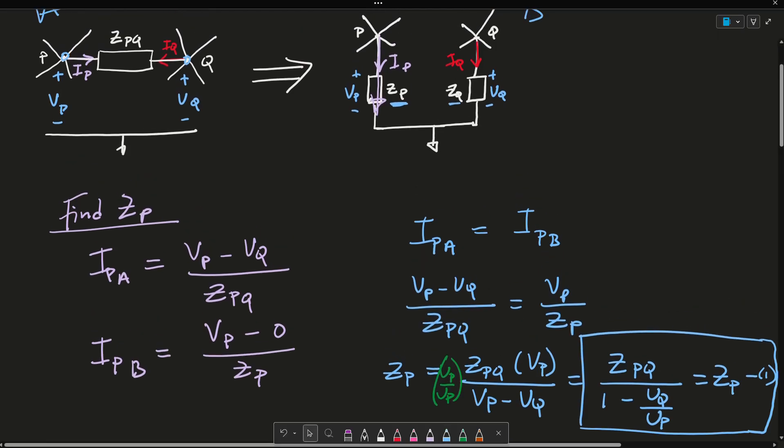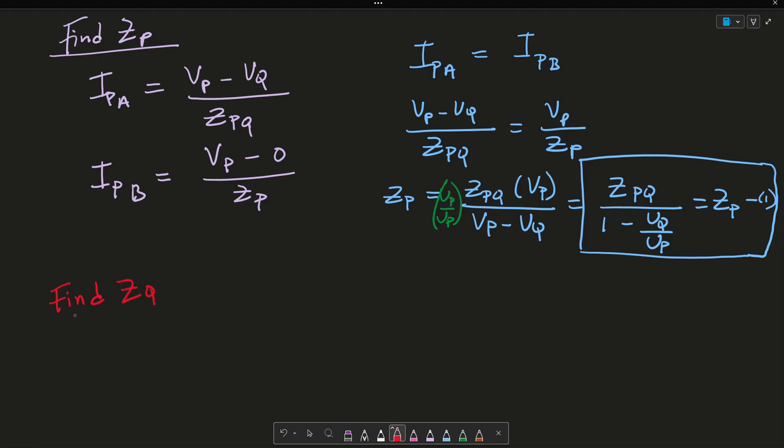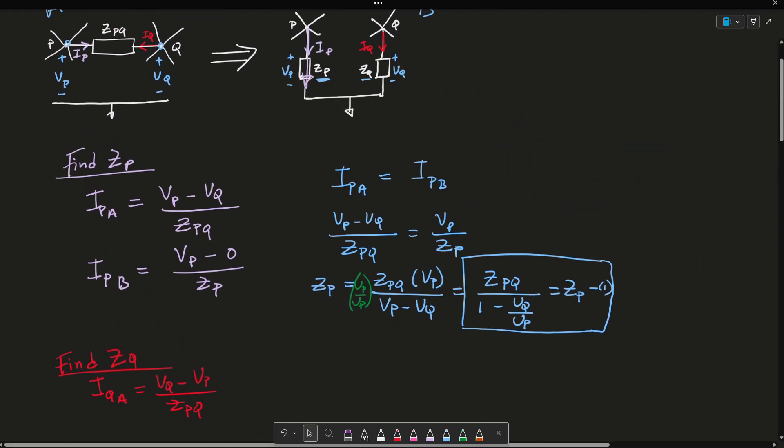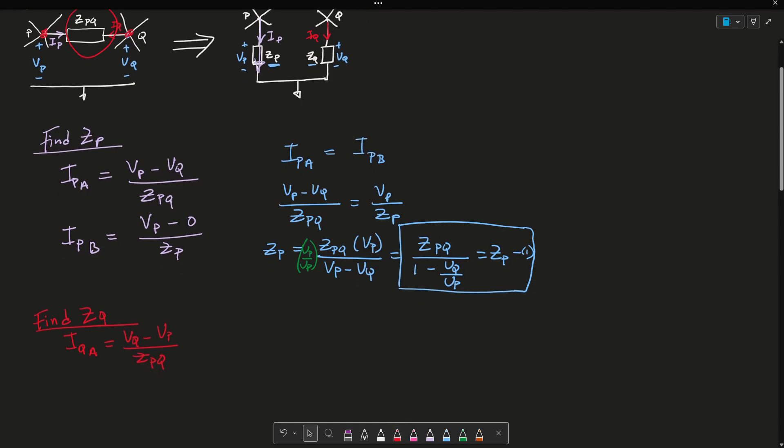The second equation is found using a similar method, except I'm going to use Q now. So find ZQ. And I'm going to say that IQA equals VQ minus VP over ZPQ.